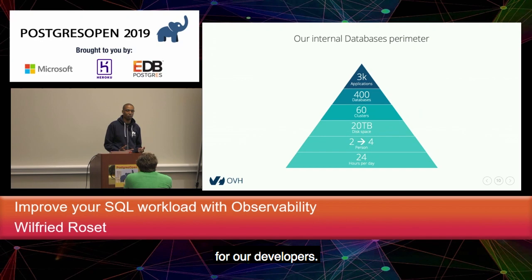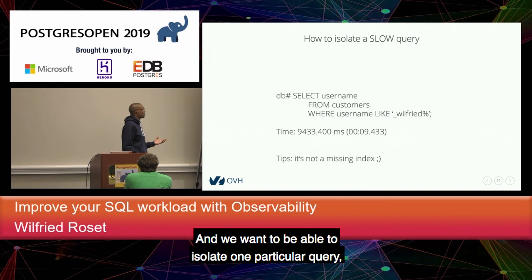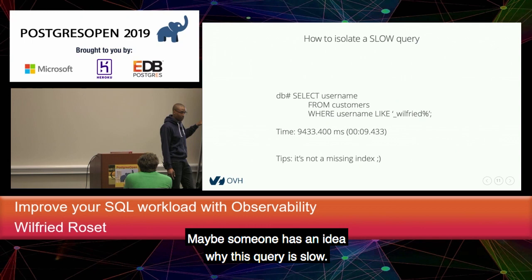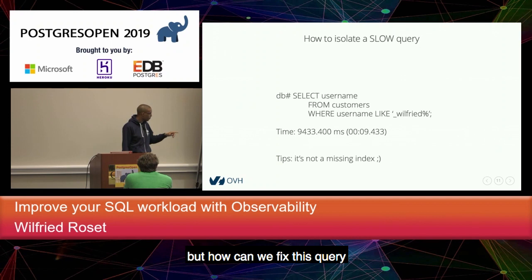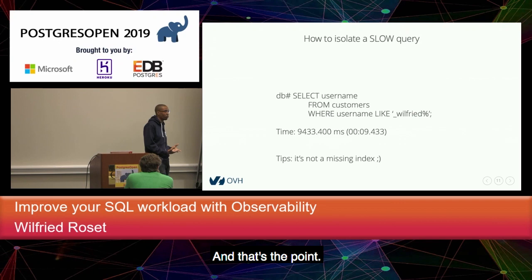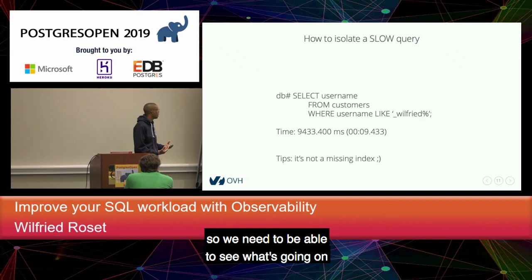With this perimeter, we want to be able to see everything and have all the answers for our developers. We want to be able to isolate one particular query — maybe a slow query. How can we fix this query if we are not able to track it? That's the point. We want to improve our workload, so we need to be able to see what's going on at each minute of the day.